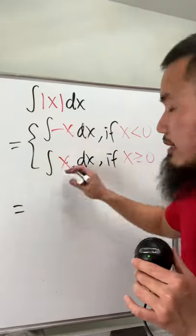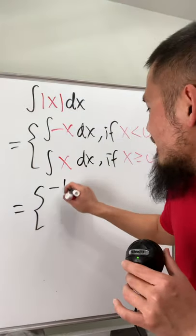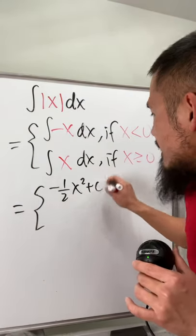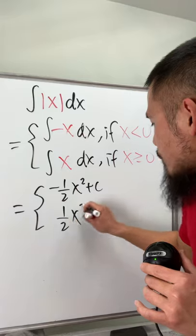And now we can just integrate this and integrate that. So for this one we get, well, that first, negative 1 half x squared plus c, and then this right here we get 1 half x squared plus c.